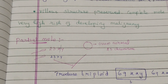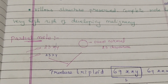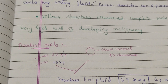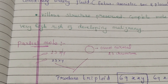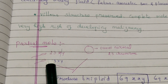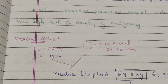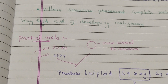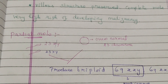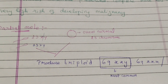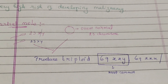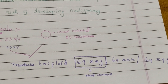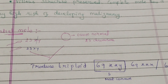In contrast, in partial mole, the ovum is normal, containing 23 chromosomes. However, fertilization occurs with two sperms. These sperms may carry 23X or 23Y chromosomes. The fusion of two sperms with one ovum produces a triploid — 69XXY, 69XXX, or 69XYY — with 69XXY being the most common.